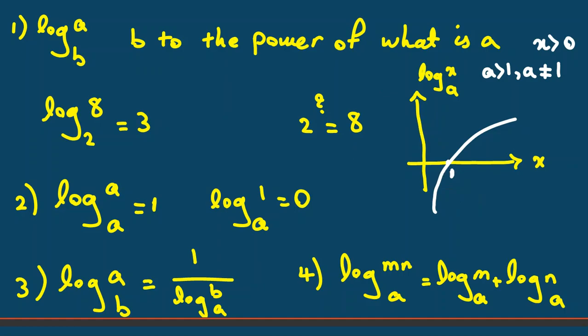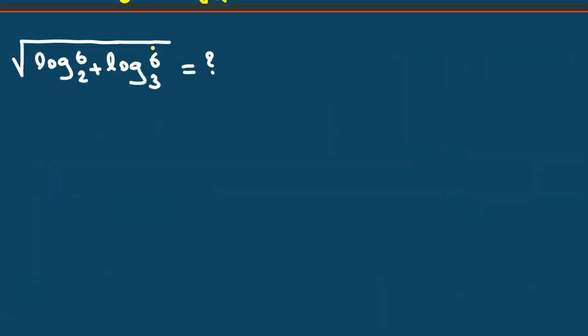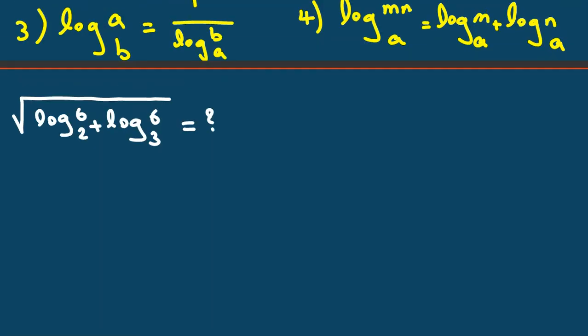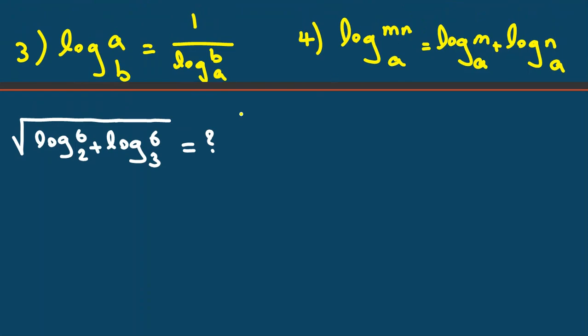So now we want to solve the problem using the rules. Log base A of MN. So we can say log base 2 of 6 is what? We can say 6 is 2 times 3. Log base 2 of 2 times 3.